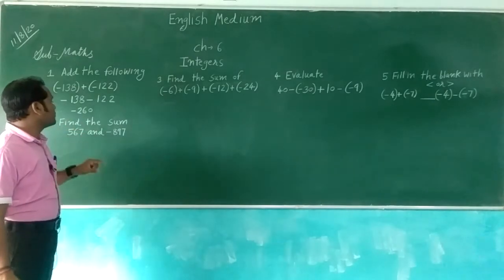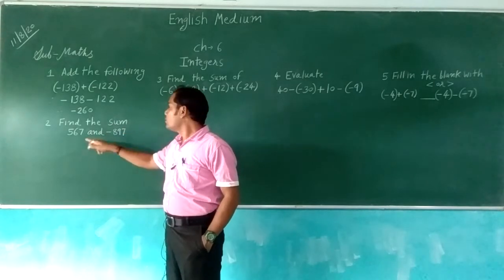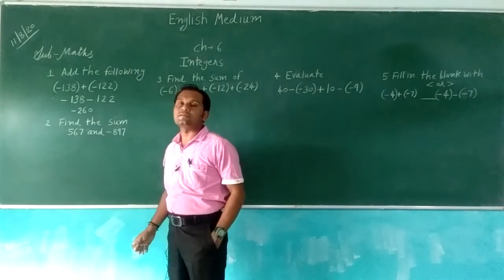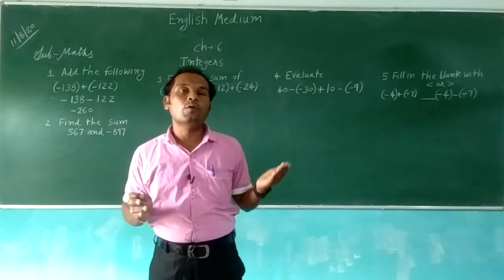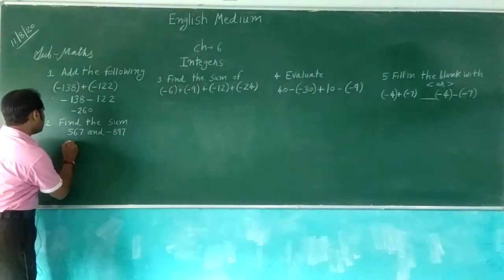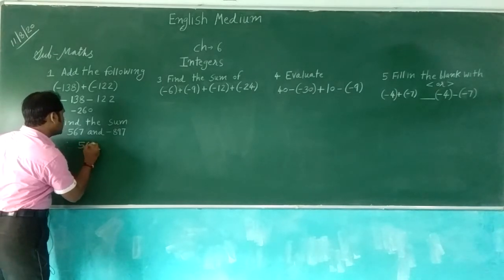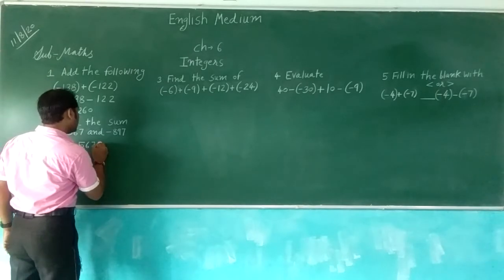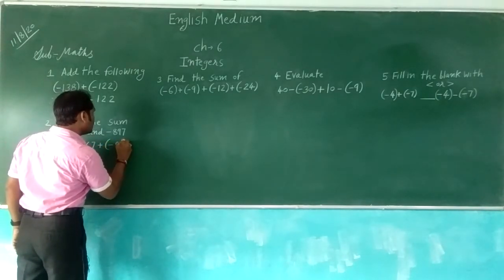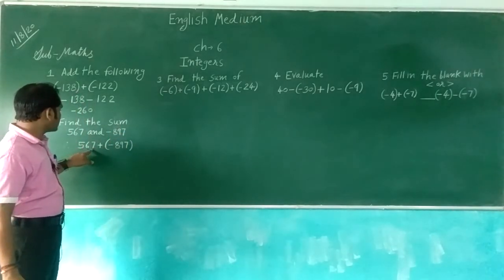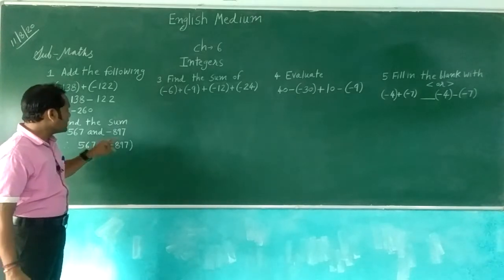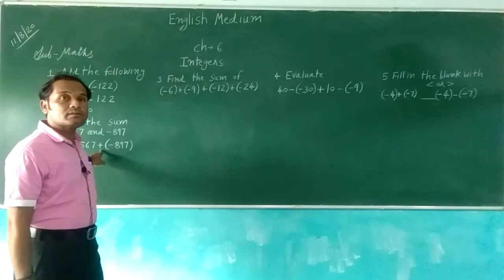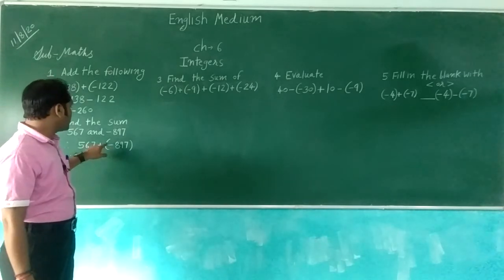Now we will see: find the sum. Two numbers are given: 567 and minus 897. We need to do their addition. So we will do: 567 plus minus 897. Sum means addition. Outside the bracket, sign is plus; inside the bracket, sign is minus. So plus minus gives minus.